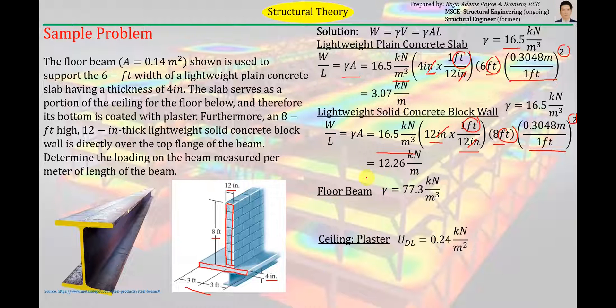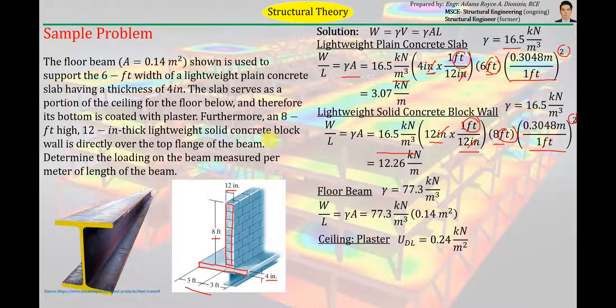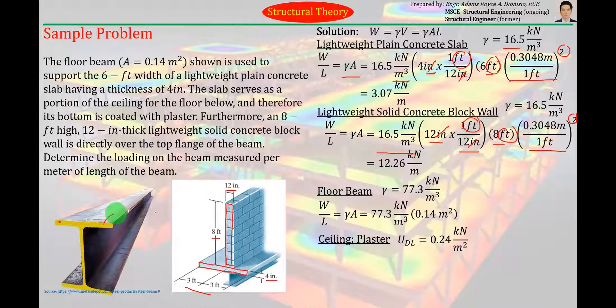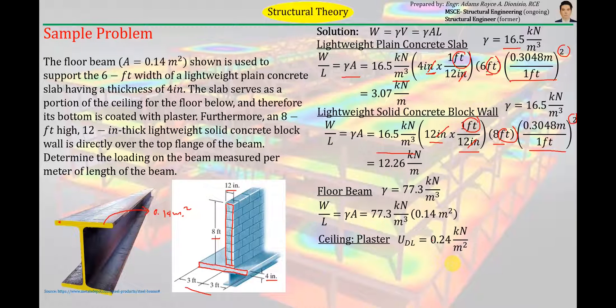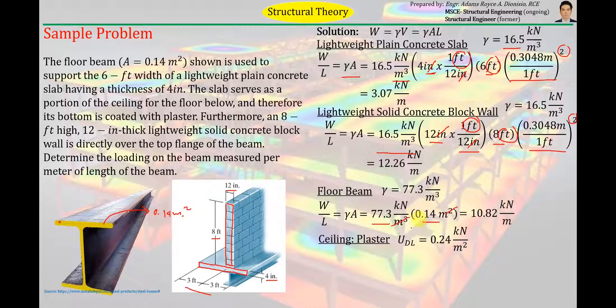Lastly, yung self-weight ng floor beam. Same formula. Unit weight of the floor beam 77.3 cross-sectional area of the floor beam. Ito yung cross-sectional area neto yung kulay dilaw. According to the problem that is 0.14 square meter. So substitute lang natin. Substitute lang natin siya dyan. Multiply. The answer will be in terms of kilonewton per meter as well kasi cancel ito. Cancel. May matitirang meter sa ilalim. So those are the loads coming from the slab block wall and the floor beam.